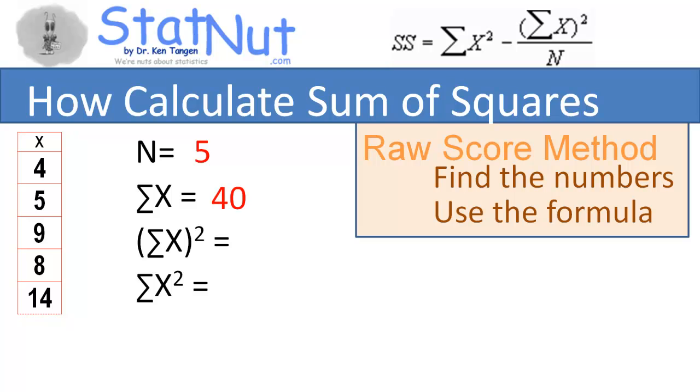Third, square the number you just calculated. Fourth, make a new column and fill it by squaring each number in the first column. Fifth, add up this new column.